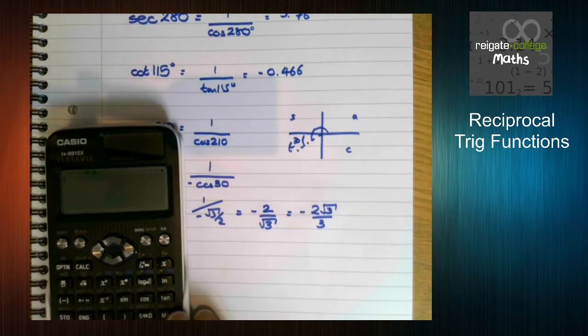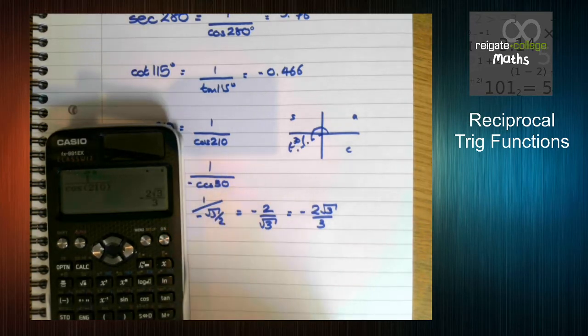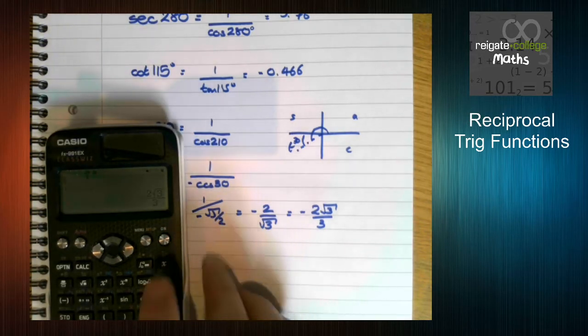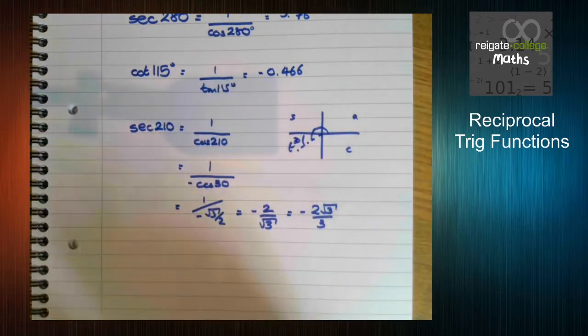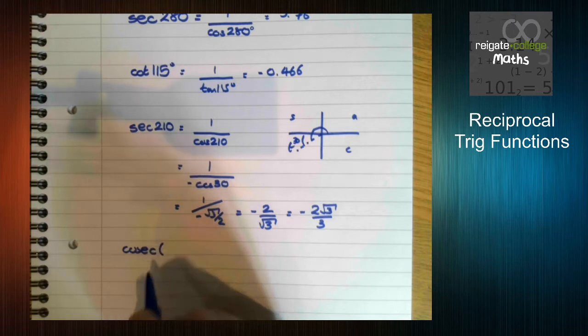To check it's right, let's do it on the calculator. So 1 over cos of 210, minus 2 root 3 over 3.